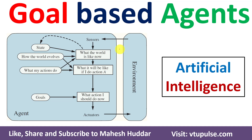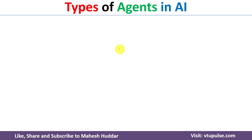Welcome back. In this video I will discuss goal-based agents in artificial intelligence with the help of a simple example. There are mainly four types of agents in artificial intelligence.